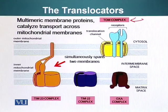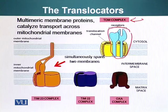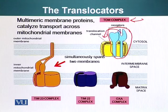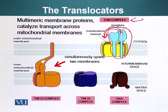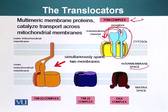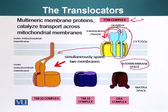The TOM complex is made up of subunits, part of which is a receptor. The receptor recognizes and binds the signal sequence, then transfers it to the translocation channel so the protein can be threaded through. The receptor transfers the protein to the translocation channel. All proteins are initially sent to the matrix space, and then after reaching the matrix space, some proteins are sent to the intermembrane space if they have an appropriate signal.